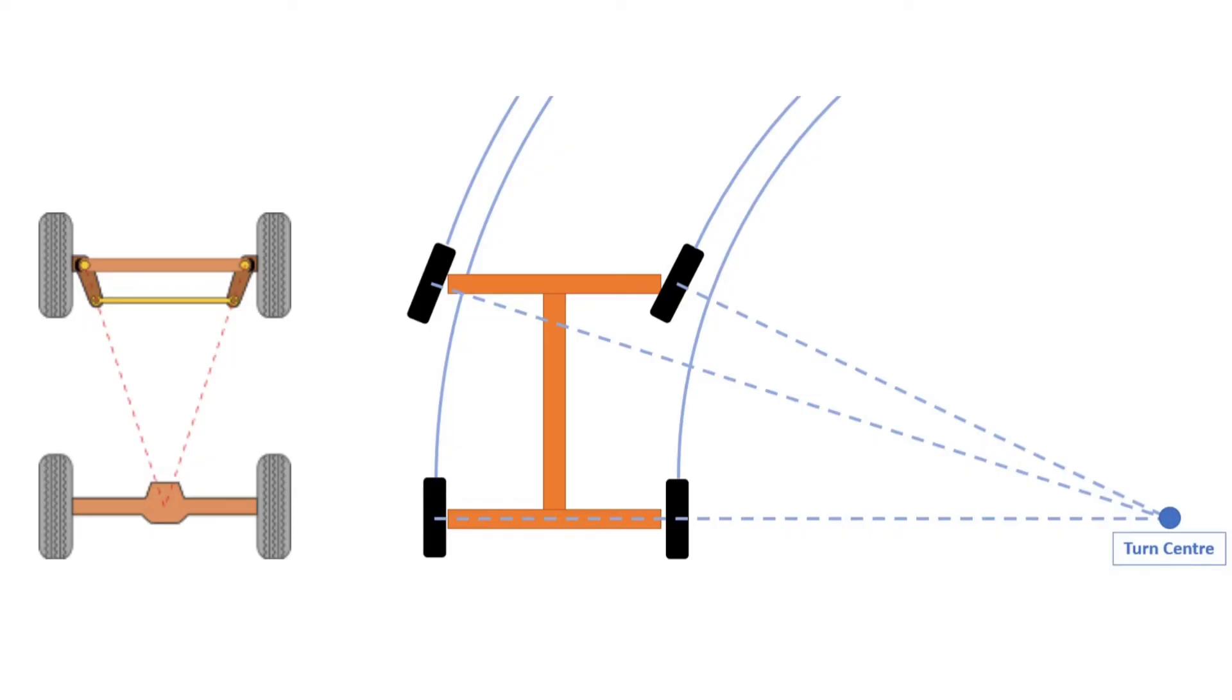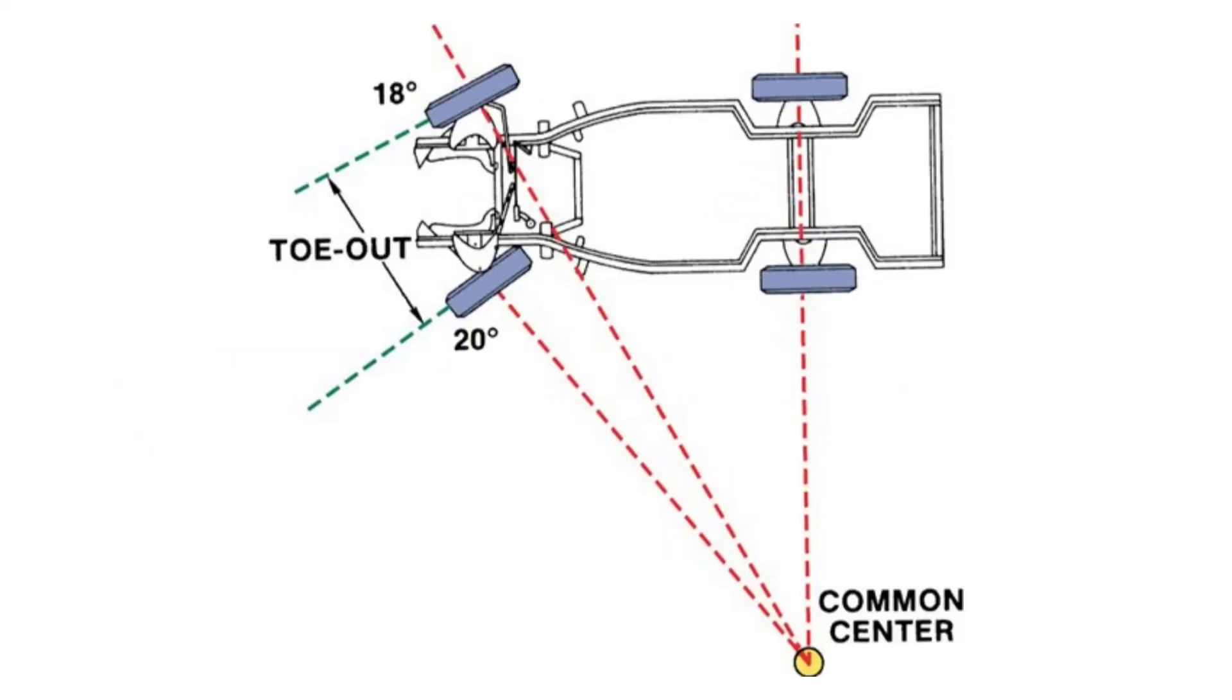As the rear wheels are fixed, the center point must be on a line extended from the rear axle. Intersecting the axes of the front wheels on this line will ensure that when the front wheels are steered, the inside wheel will have a greater angle than the outside wheel.